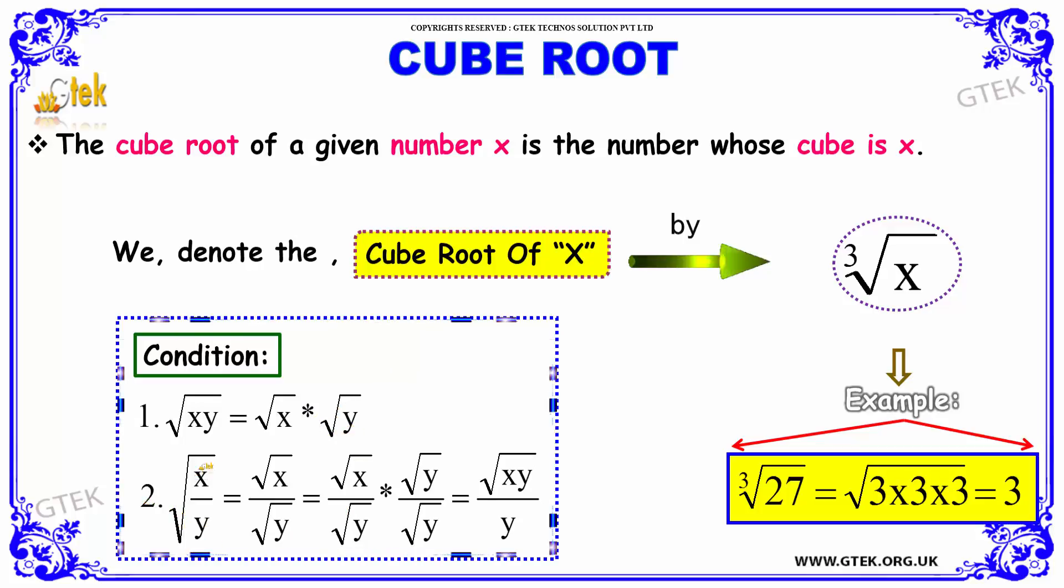√(x/y) can be written as √x/√y, which is equal to √x by √y multiplied by √y with y cancelling. The terms can be combined in this manner. Root of y multiplied by root of y is equal to y.